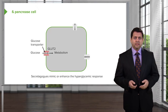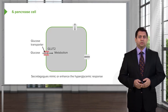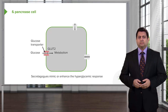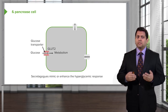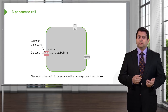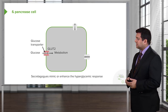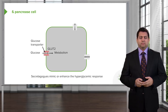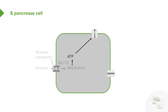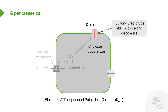How do secretagogues work? Let's take a look at that GLUT2 glucose porter at the luminal surface of the cell membrane. This glucose transporter moves glucose into the cell. The glucose is going to be used for metabolism and eventually gets broken down and converted into ATP. ATP is going to act on the potassium channel. When the potassium channel closes, the cell is depolarized. Sulfonyl urea drugs block and close and depolarize the cell membrane.